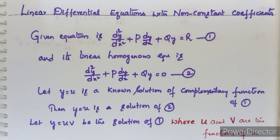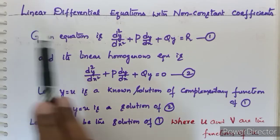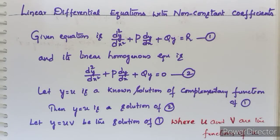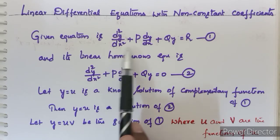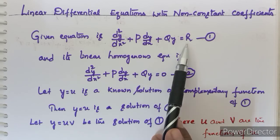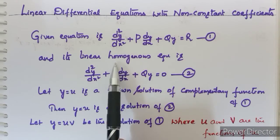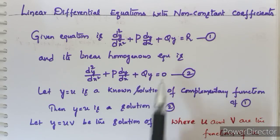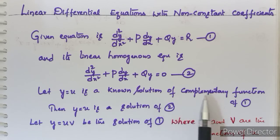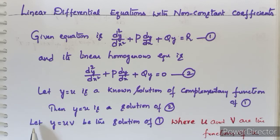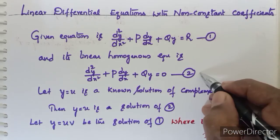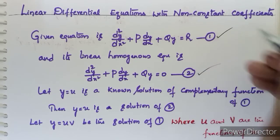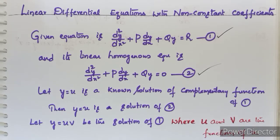Dear students, welcome back to our channel. Today we learn how to solve linear differential equations with non-constant coefficients. These equations are in the form d²y/dx² + p·(dy/dx) + qy = r. We take this as equation 1, and its linear homogeneous equation is d²y/dx² + p·(dy/dx) + qy = 0. Let y = u be a known solution of the complementary function of equation 1, and let y = uv be the solution of equation 1, where u and v are both functions of x.